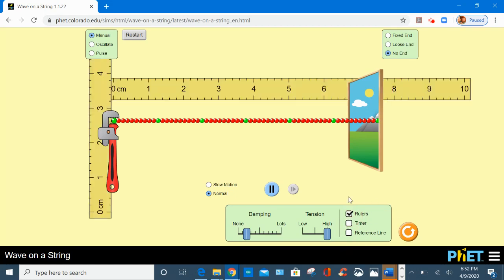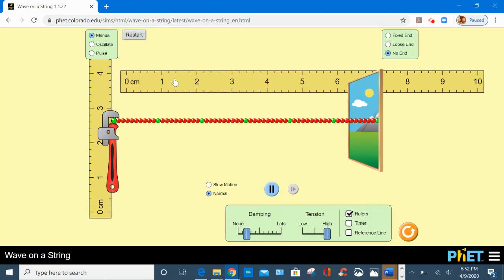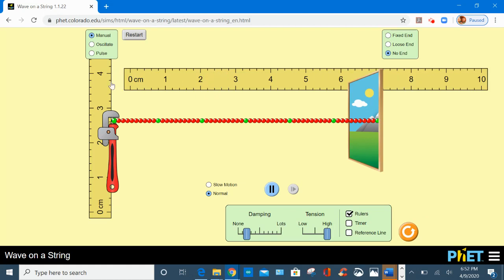The set of rulers, we have two: one to measure horizontal displacement like wavelength, and this one to measure vertical displacement like amplitude.